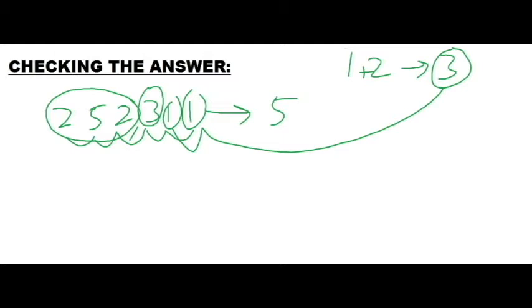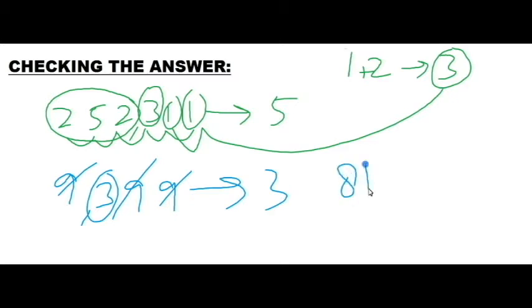And the second thing is whenever you complete 9, just cast out 9s. Like if you have 9399, this 9, this 9, this 9 doesn't matter. Your digit sum is 3. So whenever you have completed 9, just cast it out.